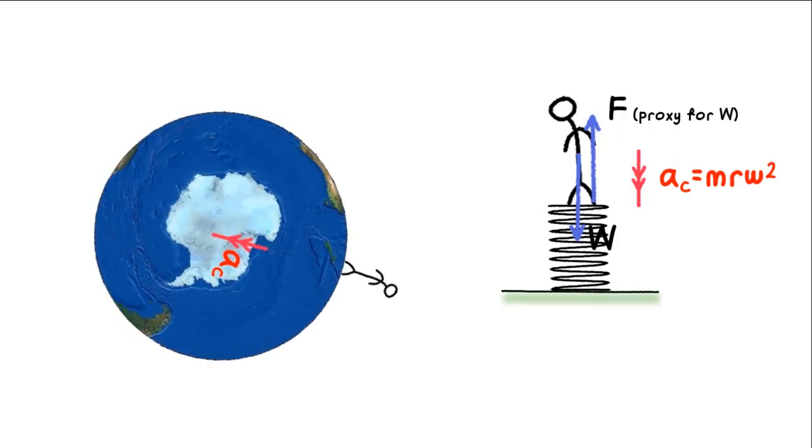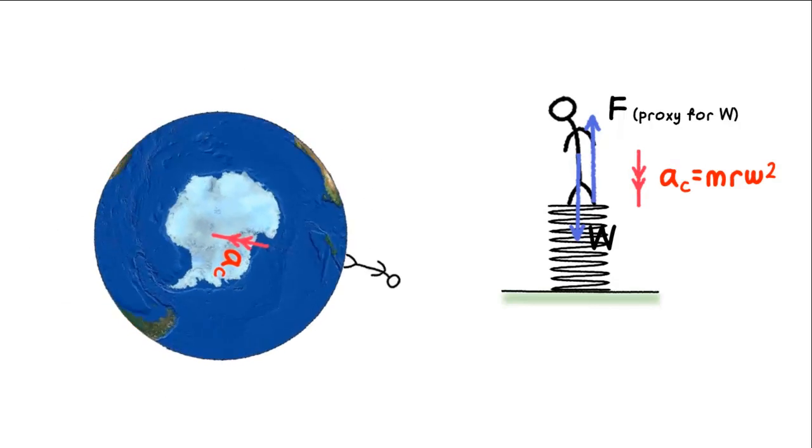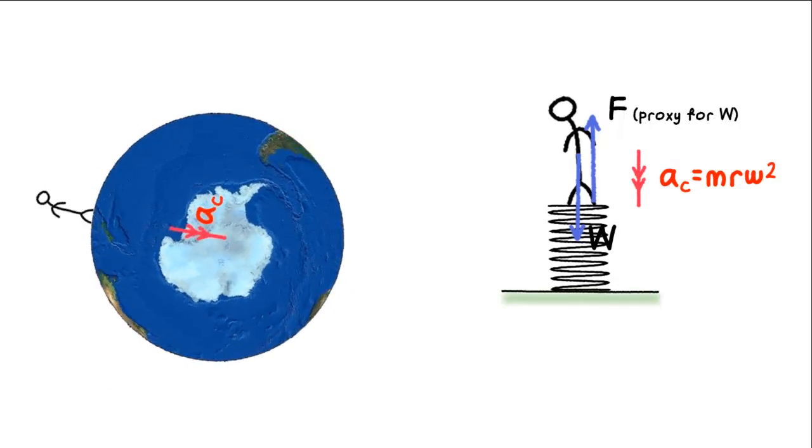That's uniform circular motion, which requires a non-zero net force acting in the centripetal direction, which is downwards towards the center of the Earth.